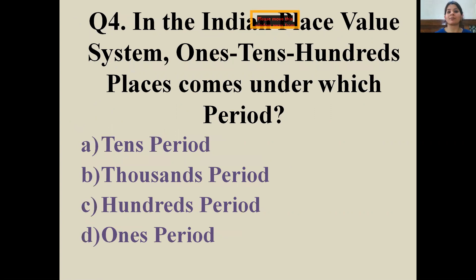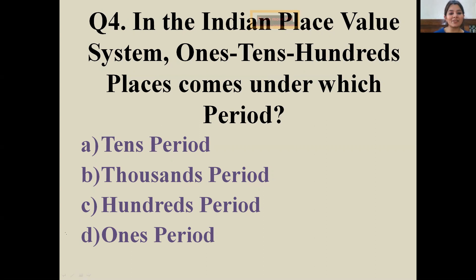Question four: in the Indian place value system, ones, tens, and hundreds places come under which period? I think I just gave you the answer in the previous question! Absolutely — ones, tens, and hundreds come under the ones period, and this is the first period in the Indian place value chart.